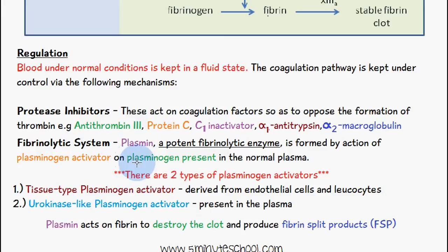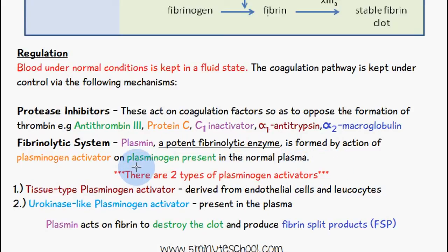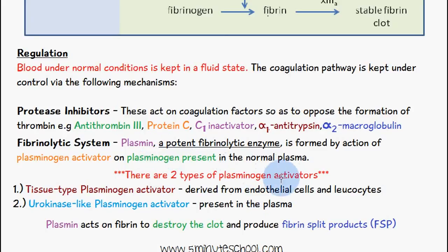Plasmin is a potent fibrinolytic enzyme that digests fibrin. It is formed by the action of plasminogen activator on plasminogen, which is normally present in plasma. Once a plasminogen activator acts on plasminogen, it converts it into plasmin — a potent fibrinolytic enzyme capable of destroying clots. There are two types of plasminogen activators.